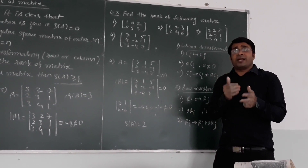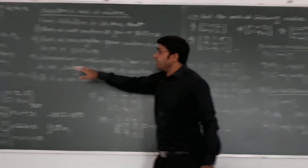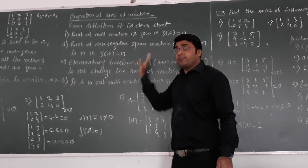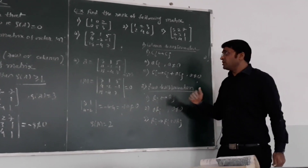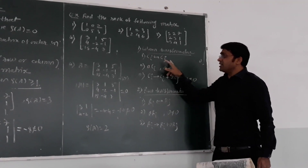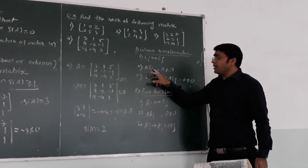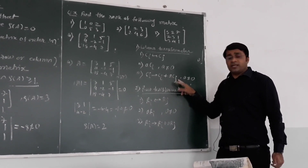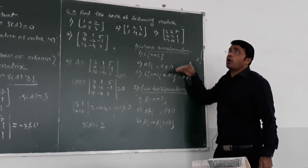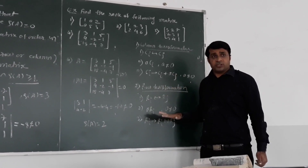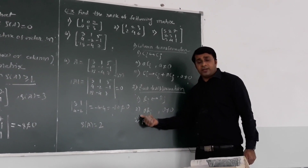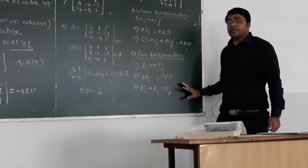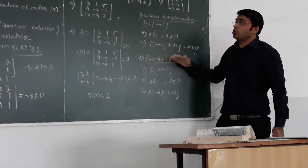There is one more method to find out the rank, called the row transformations method. Elementary transformations — whether row transformation or column transformation — do not change the rank of the matrix. Elementary column transformations include: interchanging two columns, multiplying any column by a non-zero element, or changing a column as Ci plus a times Cj. Similarly, elementary row transformations are: interchanging two rows, multiplying a row by a non-zero element, or changing a row as Ri plus a times Rj.